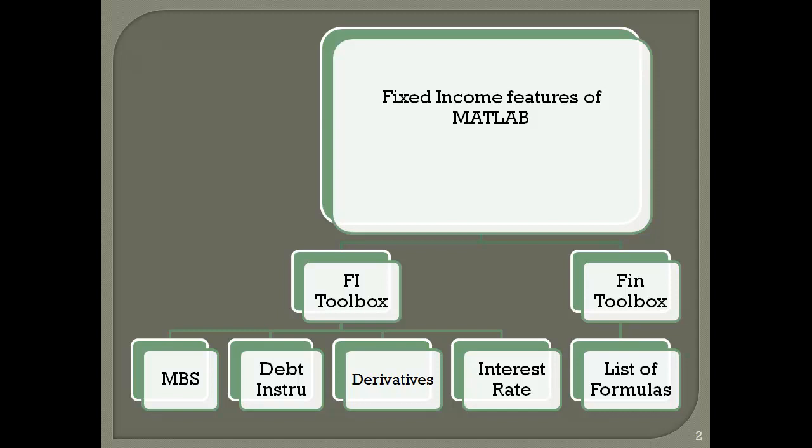Looking at the overall structure, we have the fixed income part in MATLAB divided into two broad categories. The first category, seen on the southwest of your screen, is the generic financial toolbox category and it has a list of commands I will go through. Then we have a dedicated toolbox for the fixed income part, which has four parts: the MBS, the debt instruments, the derivatives, and the interest rate — and we will look at all four of them.